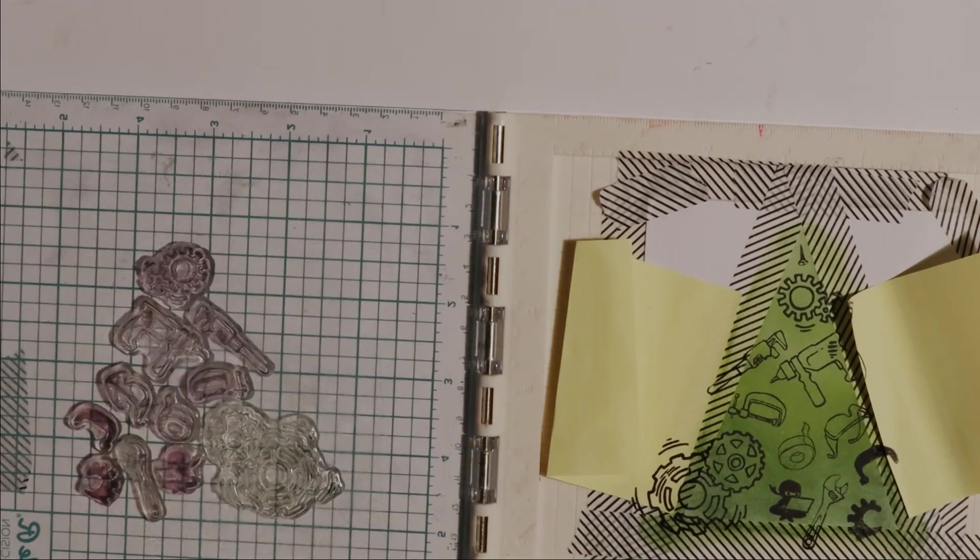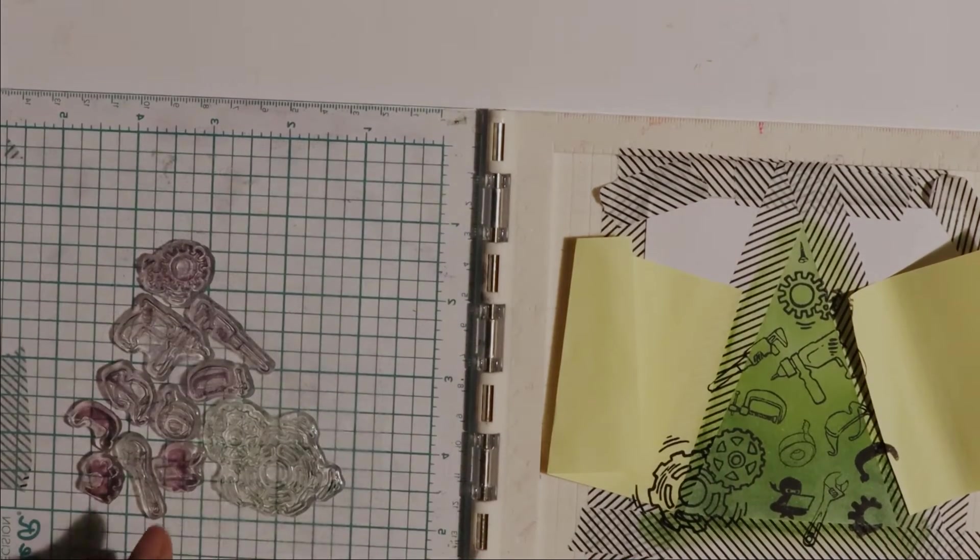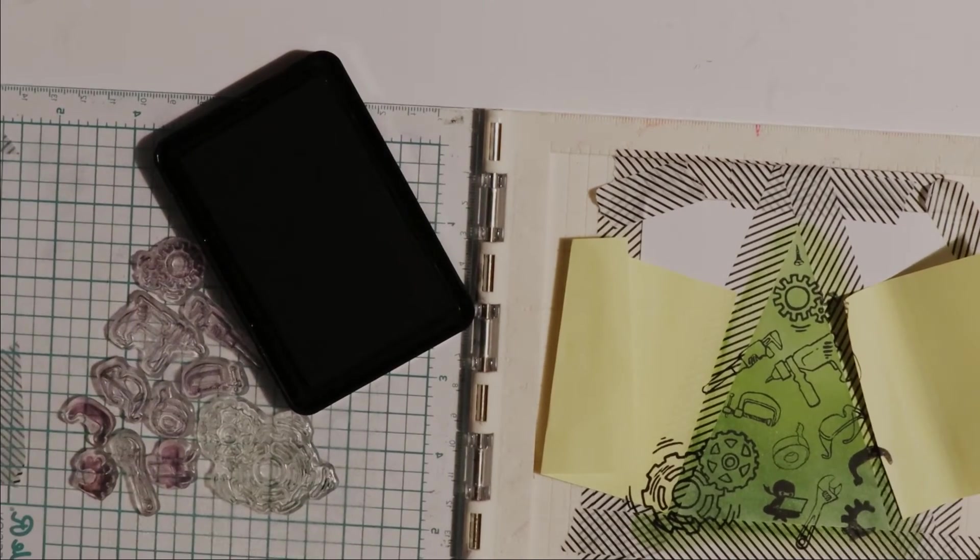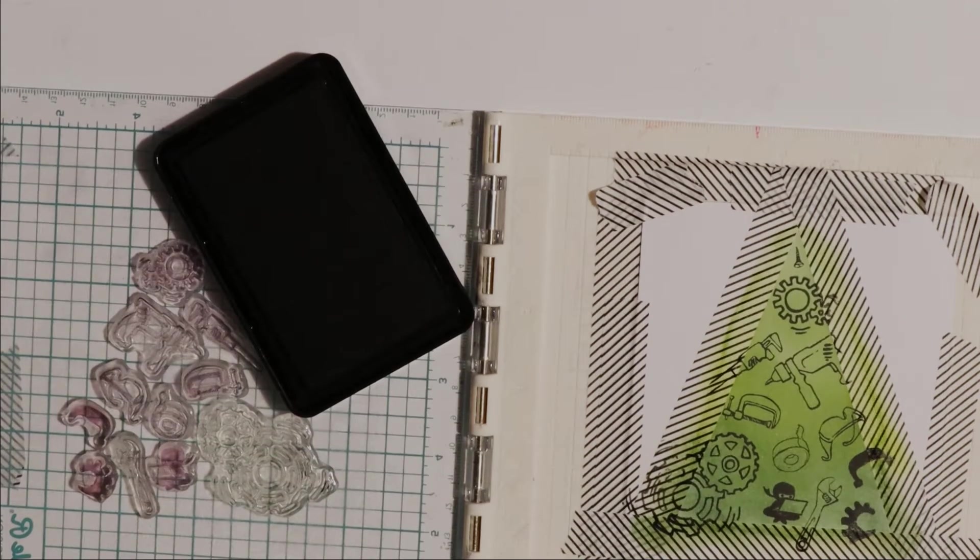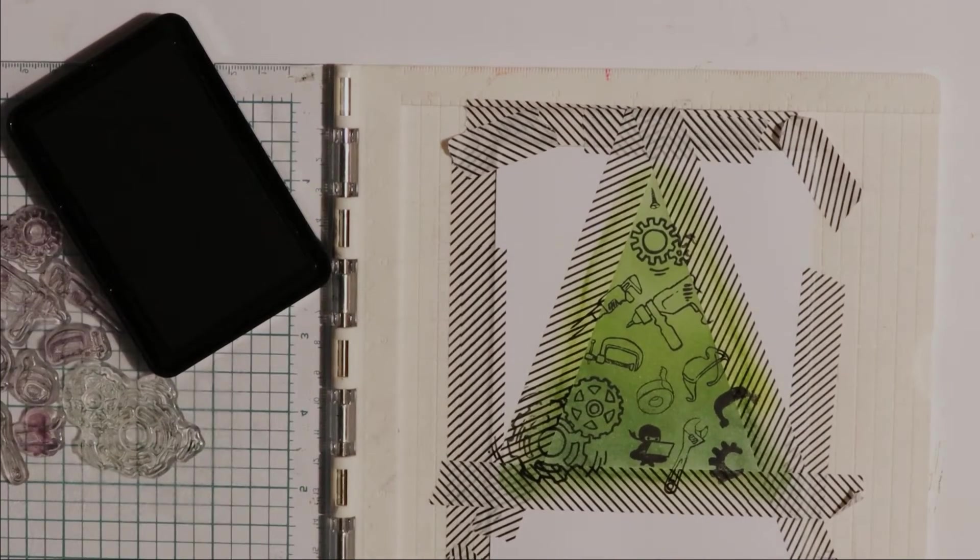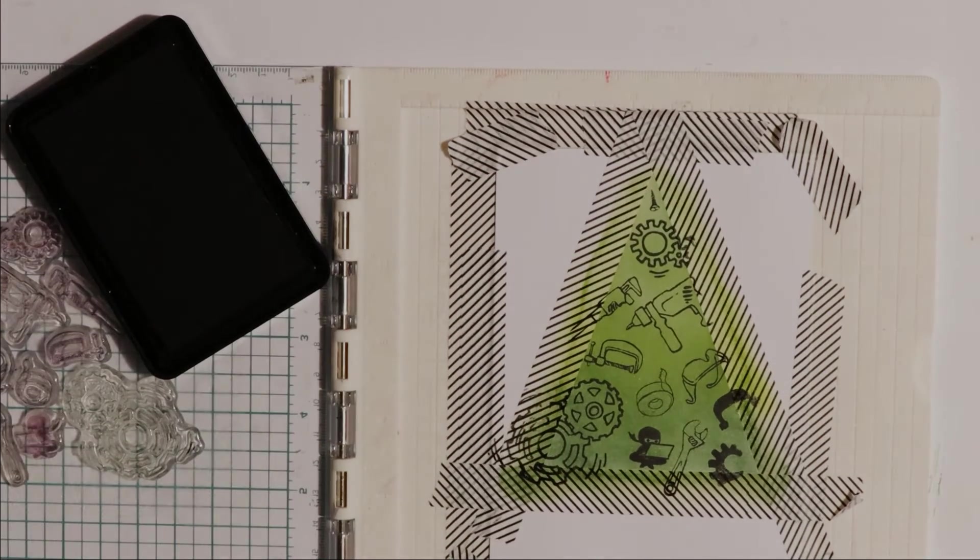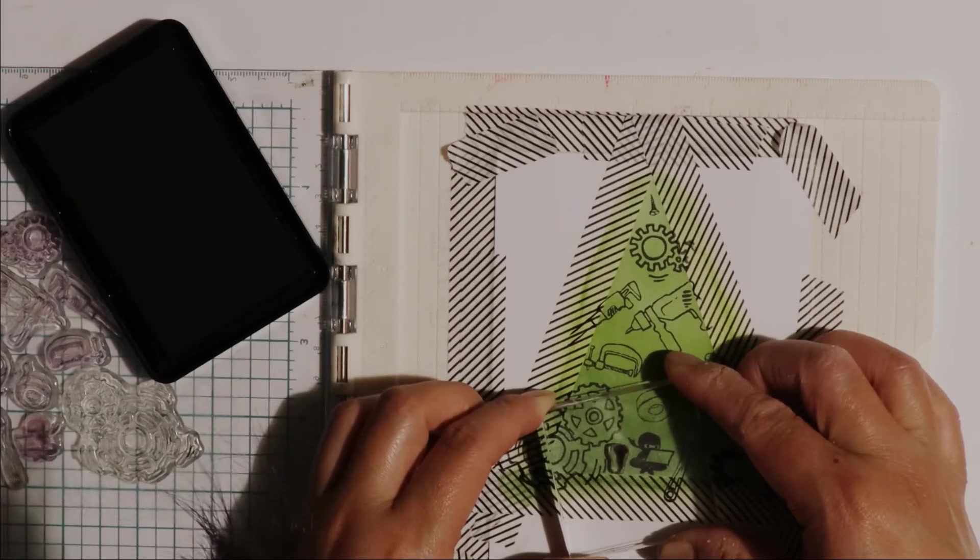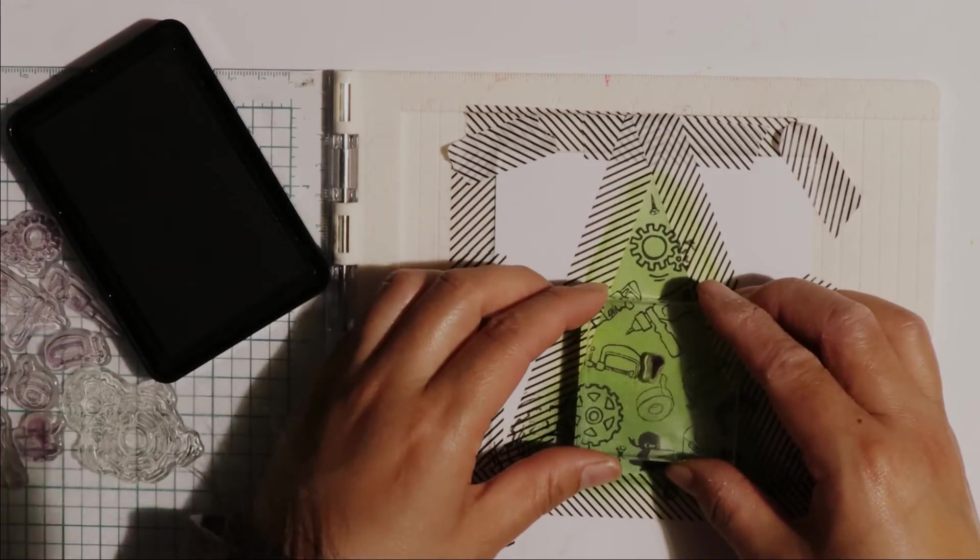I'm just going to take that small screw stamp and put it on an acrylic block. And then bring back my Gena K Designs Amalgam Ink in Jet Black, just removing those post-it notes. And I'm just going to use that small screw stamp to fill in the gaps in my engineering tree. So you'll see that I just stamped a few times that small screw to fill in the gaps. And I rotate the stamp as well to get a bit of difference.